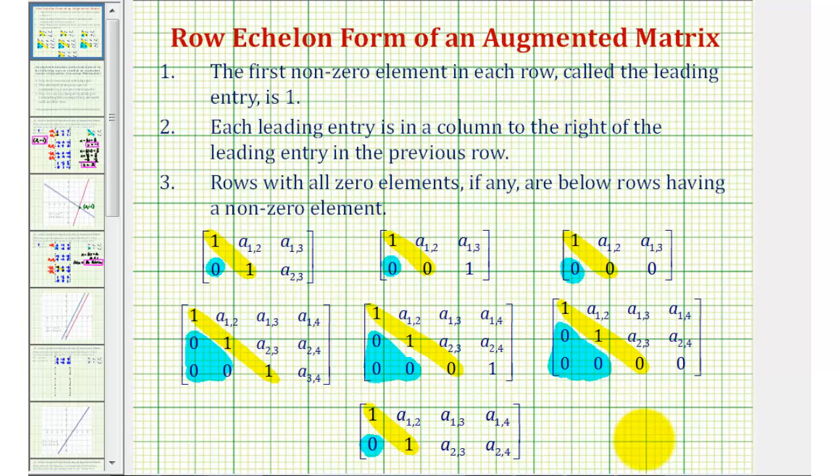If we focus on the main diagonal, highlighted here in yellow, notice how the main diagonals often only contain ones, but they can also contain a zero if the system has either no solution or infinite solutions. Next, notice that all of the elements below the main diagonal are zero.